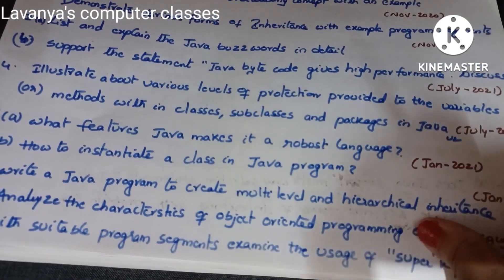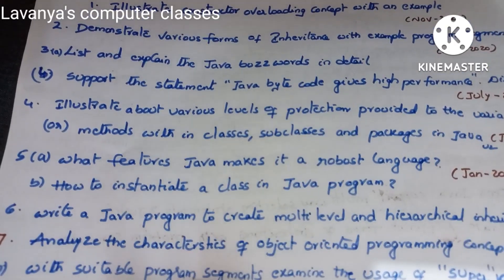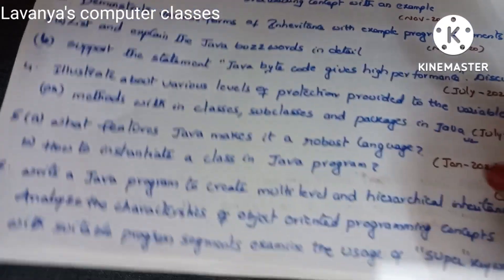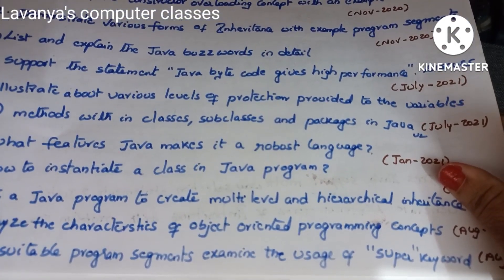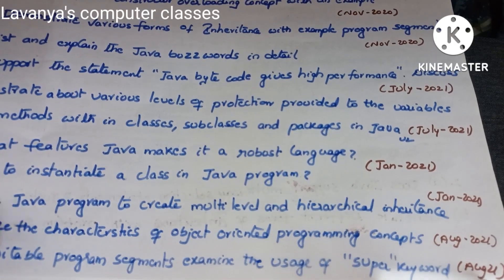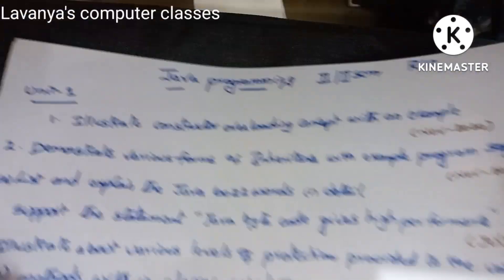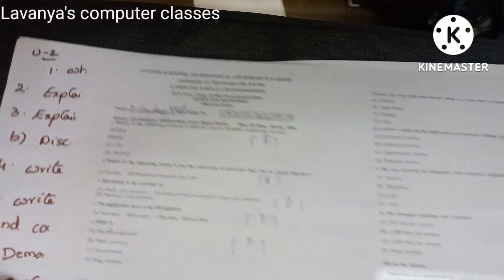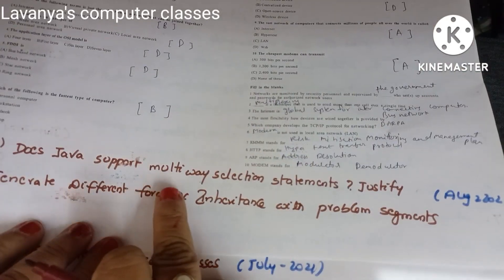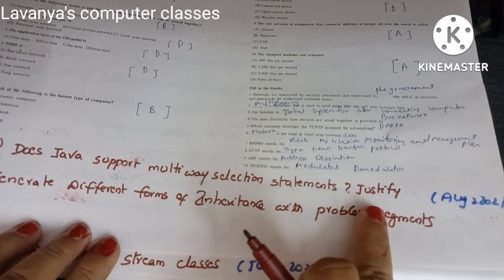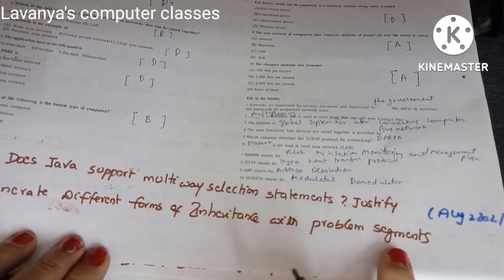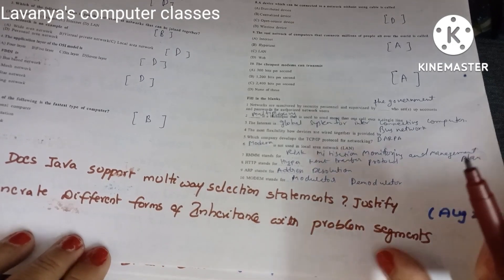Next, 'With suitable program segments, examine the usage of the super keyword' — explaining keywords like super and this with an example, from August 2021. Additional unit one questions include: 'Does Java support multi-way selection statements? Justify,' and 'Generate different forms of inheritance with program segments,' both from August 2021.